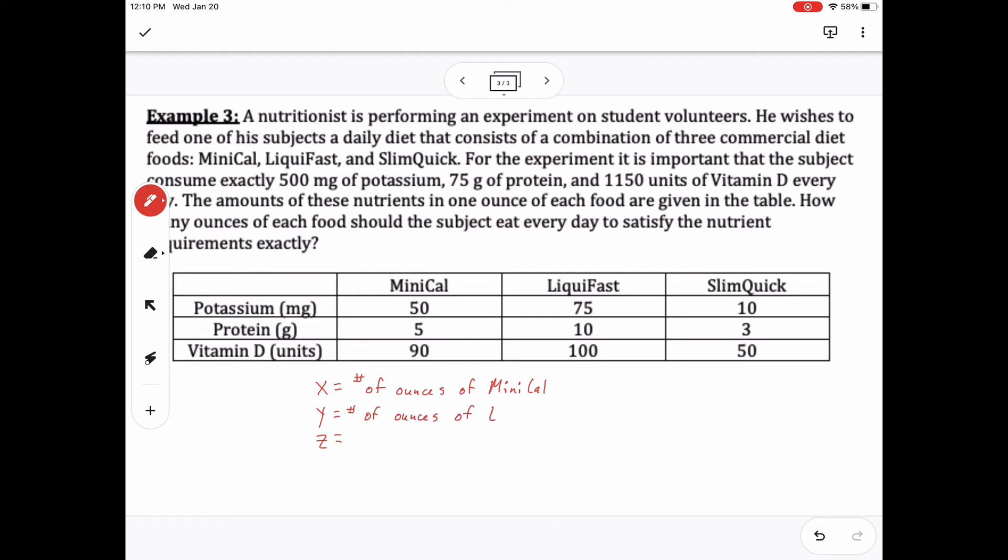So here we're going to set x, y, and z equal to the number of ounces of each diet food that they have. So x is mini-cal, y is liquefast, and z is slim quick.